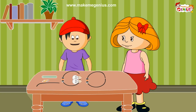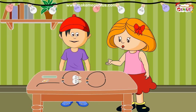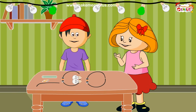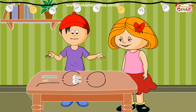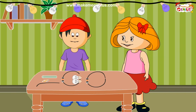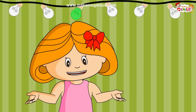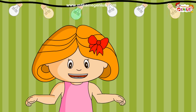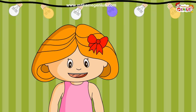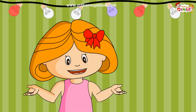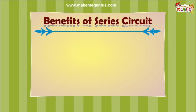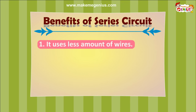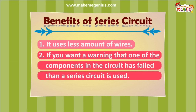Is there no use for this kind of circuit? We use this type of circuit in Christmas or Diwali lights — one small bulb after another. But if one of the bulbs goes off, all lights will go off. And there is another disadvantage: if you keep increasing the number of bulbs in this circuit, the light of each bulb will get dimmer. Are there any benefits? There are two: it uses less amount of wire, and if you want a warning that one of the components in the circuit has failed, then the series circuit is used.